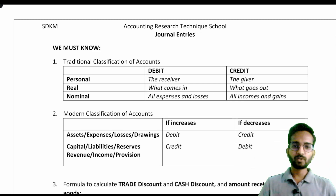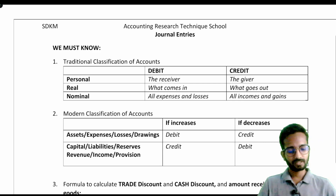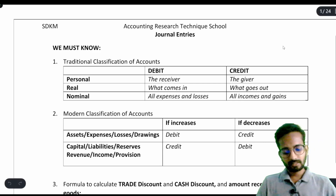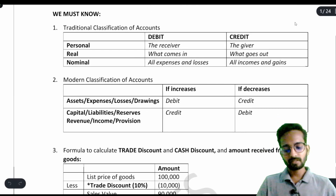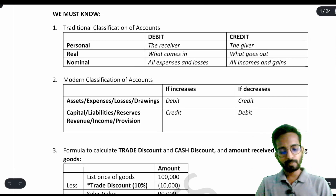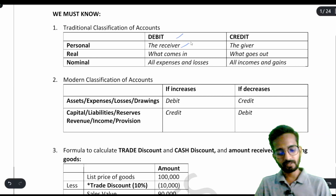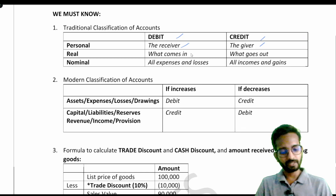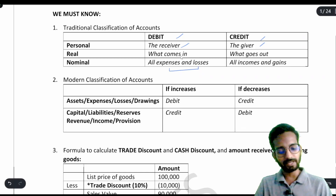Hello everyone, in this video we will be learning about journal and ledger. The first thing we need to revise is the traditional classification of accounts. For personal account: debit the receiver and credit the giver. For real account: debit what comes in, credit what goes out. For nominal accounts: all expenses and losses will be debited and all incomes and gains will be credited.